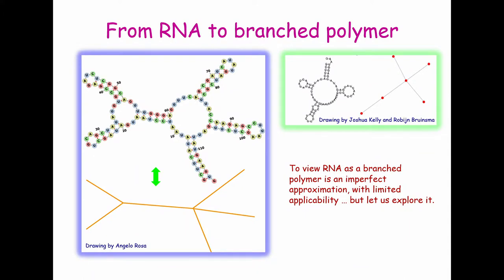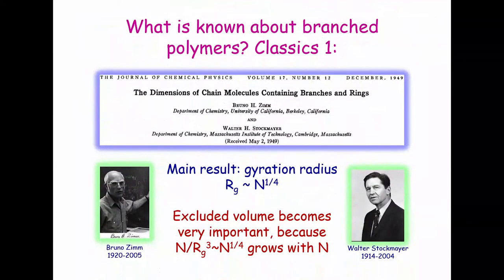But really, most of my talk, I will be talking about these branched polymers, and I have here two pictures from two papers. One is drawn by Angela Rosa, and another by either Robin Brunschma or his student Joshua Kelly. I do not know who did that. Kelly. Kelly, okay. So this is simpler. This is more artful. But the idea is still the same, and you know this idea better than I do. And I will be assuming that this approximation, which is obviously an imperfect approximation, I will assume that it works, and I will consider something of this sort.